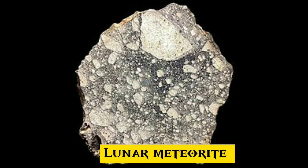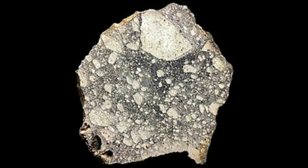3. A lunar meteorite is a meteorite that is known to have originated on the Moon. A meteorite hitting the Moon is normally classified as a transient lunar phenomenon. Total known specimens: 306. Alternative name: lunite.